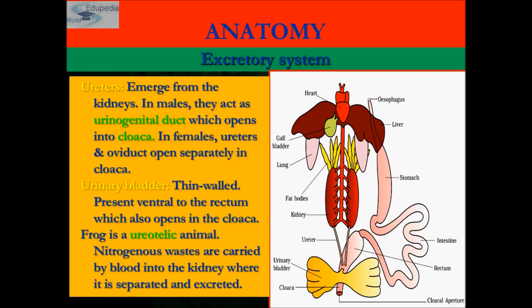In male frogs, the ureters act as a urinogenital duct opening into the cloaca, whereas in females, the ureter and oviduct open separately in the cloaca. The urinary bladder — the yellow structure — is very thin-walled and is present on the ventral side of the rectum, opening into the cloaca.